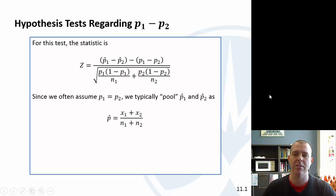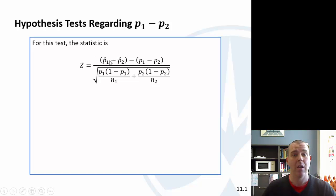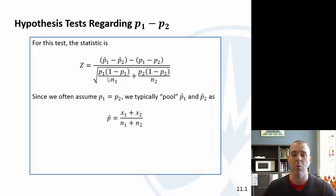The test statistic is this z where we have the value that we're looking at, p1 hat minus p2 hat, minus what we think it is from the null hypothesis, over this standard deviation. Now typically we assume that these are equal. So then what we would do is we would pool the p1 hat and p2 hat into this p hat, where we add the numerators to get the total number of successes and divide by the total number of observations.